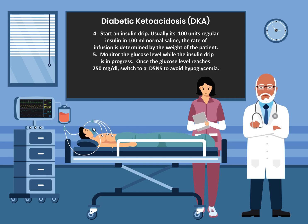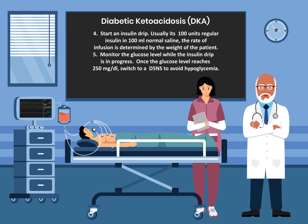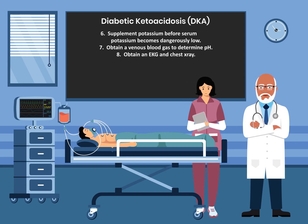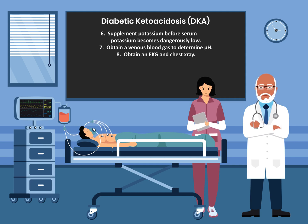Number five, monitor the glucose level while the insulin drip is in progress. Once the glucose level reaches 250 mg per dL, switch to D5 normal saline to avoid hypoglycemia. Number six, supplement potassium before serum potassium becomes dangerously low. Number seven, obtain a venous blood gas to determine the pH. And number eight, obtain an EKG and a chest X-ray.